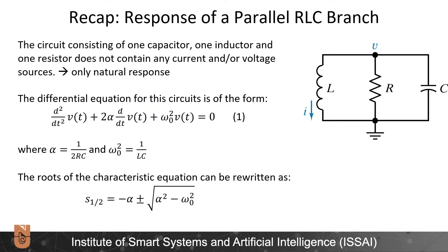Previously, we learned that the differential equation for a parallel RLC branch can be written as: second derivative of V plus two alpha times first derivative of V plus omega zero squared times V(t) is equal to zero. Here, alpha is the damping factor and omega zero is the resonant frequency. For this specific circuit, alpha is equal to one over 2RC and omega zero squared is equal to one over LC. Accordingly, we can find the roots of the characteristic equation as S1,2 equal to minus alpha plus or minus the square root of alpha squared minus omega zero squared.